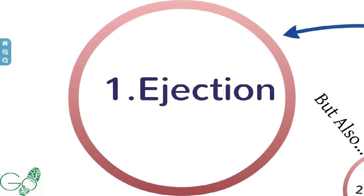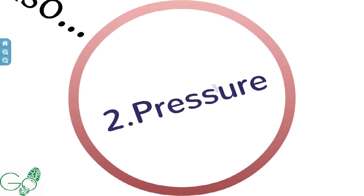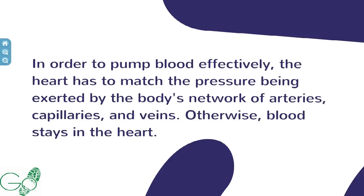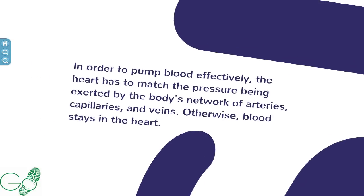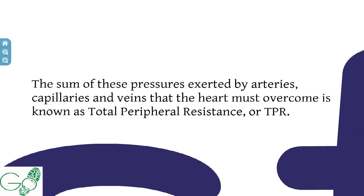The left ventricle ejects blood into systemic circulation, but pressure plays a key role. In order to pump blood effectively, the heart has to match the pressure exerted by the body's network of arteries, capillaries, and veins — otherwise blood stays in the heart. The sum of those pressures that the heart must overcome to perfuse systemic tissues is known as total peripheral resistance, or TPR.